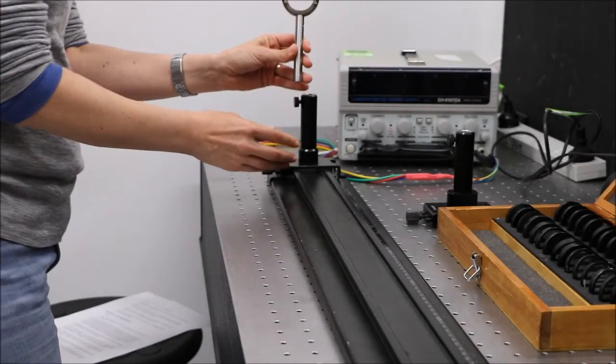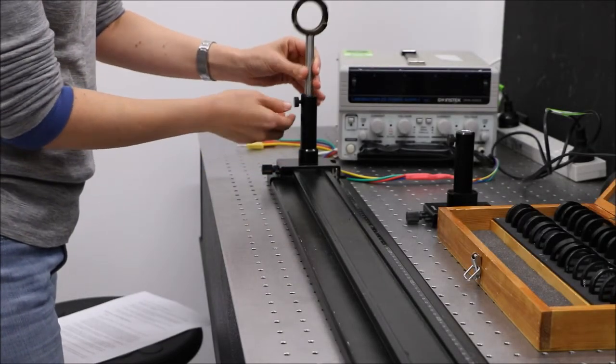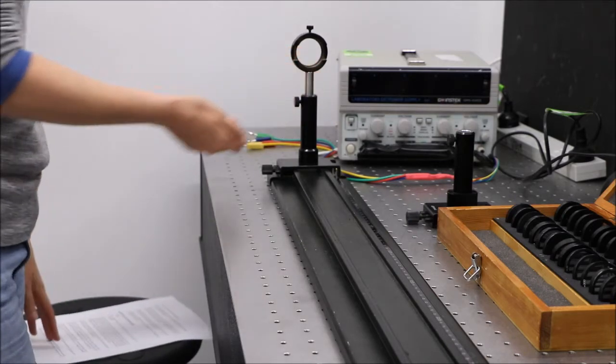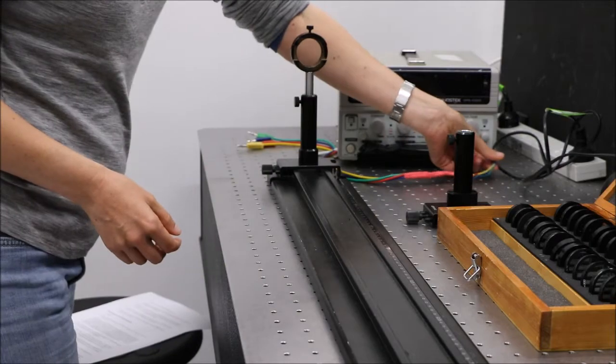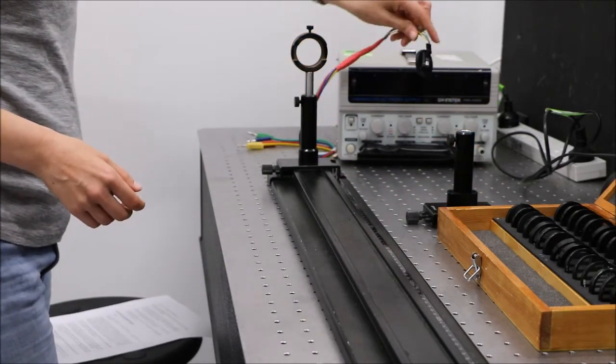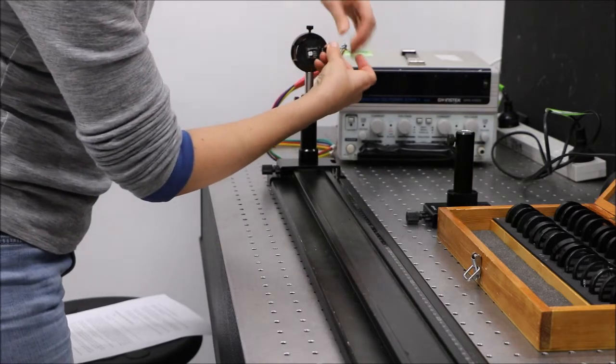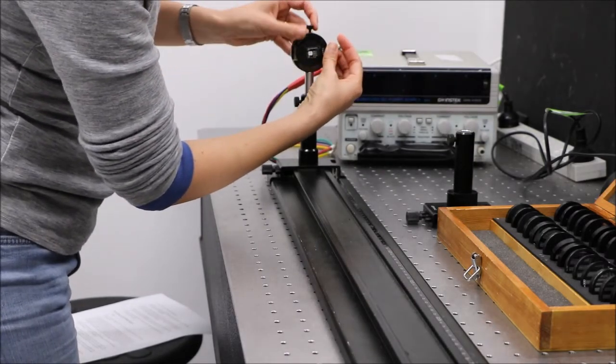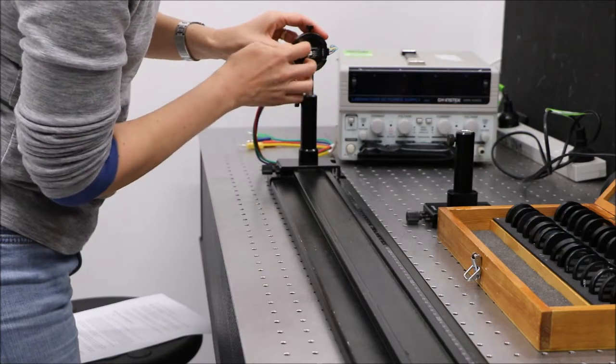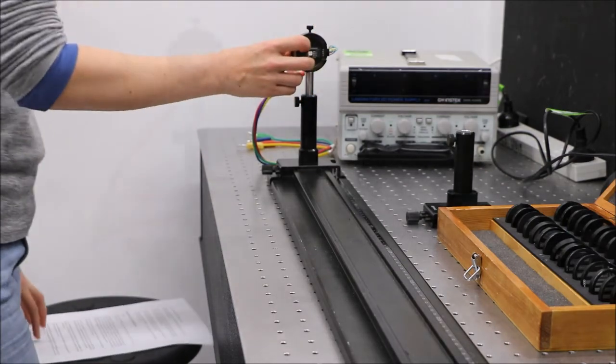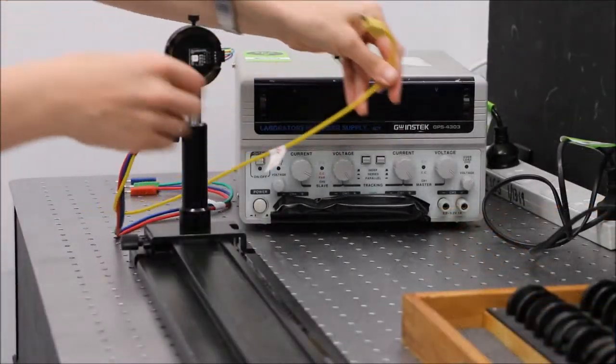Insert a lens holder into an X carrier and place it at the end of the rail. Gently clamp the RGB LED device into the lens holder. The yellow lead goes to the positive terminal.